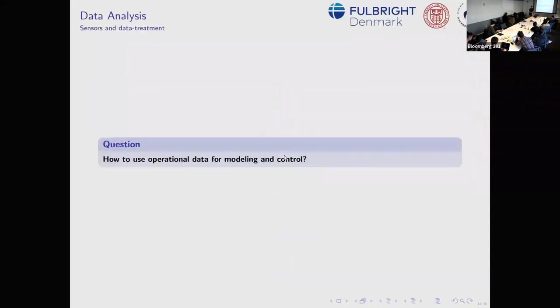Now into datasets. The first thing is data analysis — figure out what we're looking at. The big question: how to use operational data for modeling and control, because we don't have a dataset collected for this purpose. This data was already there — collected because technicians and operators needed it for other purposes — so it's not always sampled or treated in the right way.